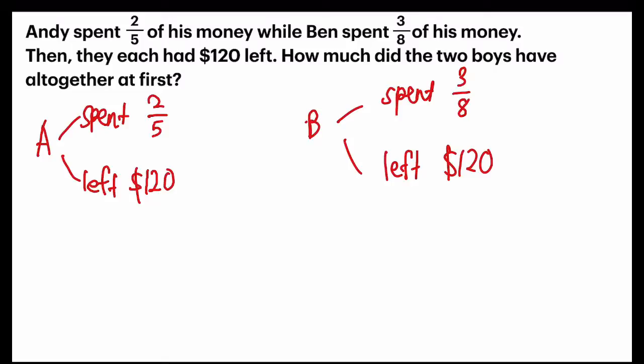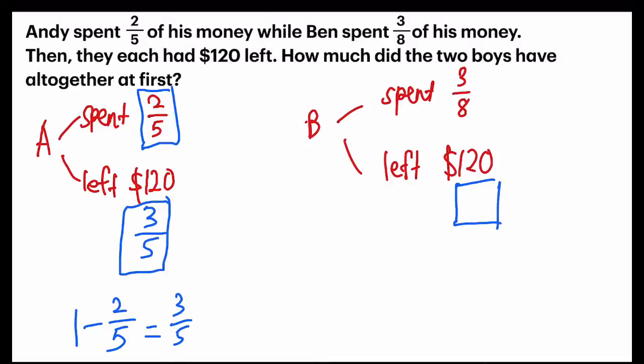Let's take a look at the fraction. If Andy had spent 2/5, that means he would have 3/5 left. How did I get that fraction? I used one whole to subtract 2/5 and I get 3/5. Same thing goes to Ben. If Ben spent 3/8, that means the $120 would be equivalent to the fraction of 5/8.